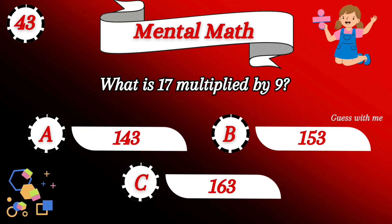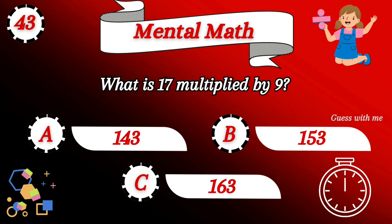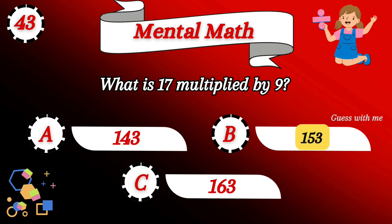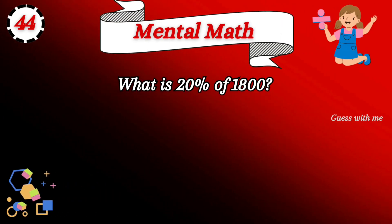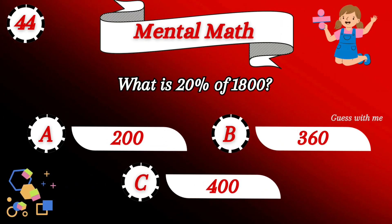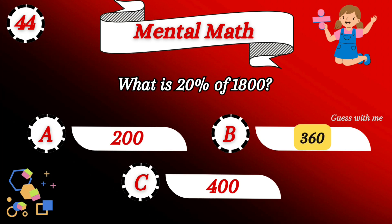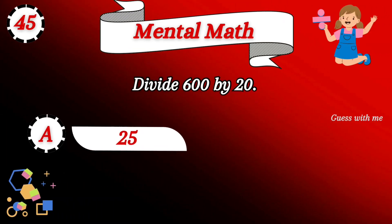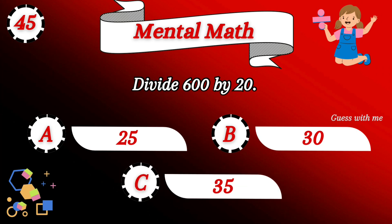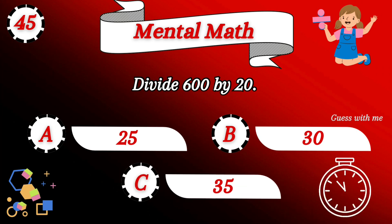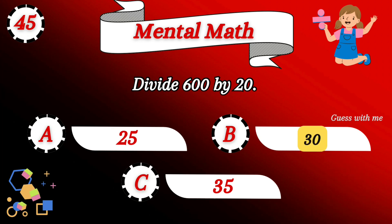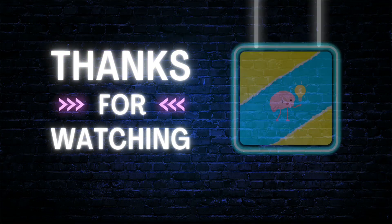Option B — 153 is the right answer. What is 20 percent of 1800? The right answer is 360. Divide 600 by 20 — the answer is 30. So here the video ends, thanks for watching.